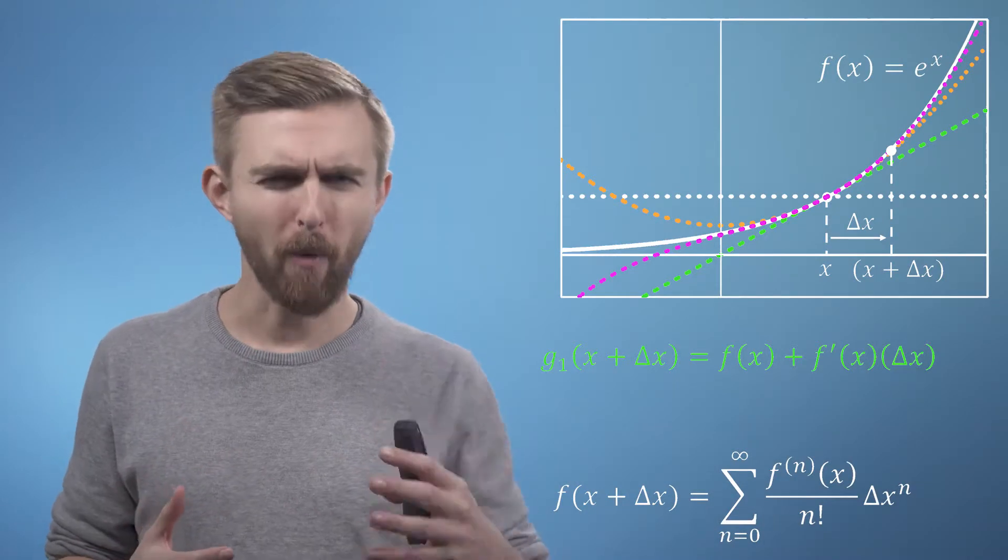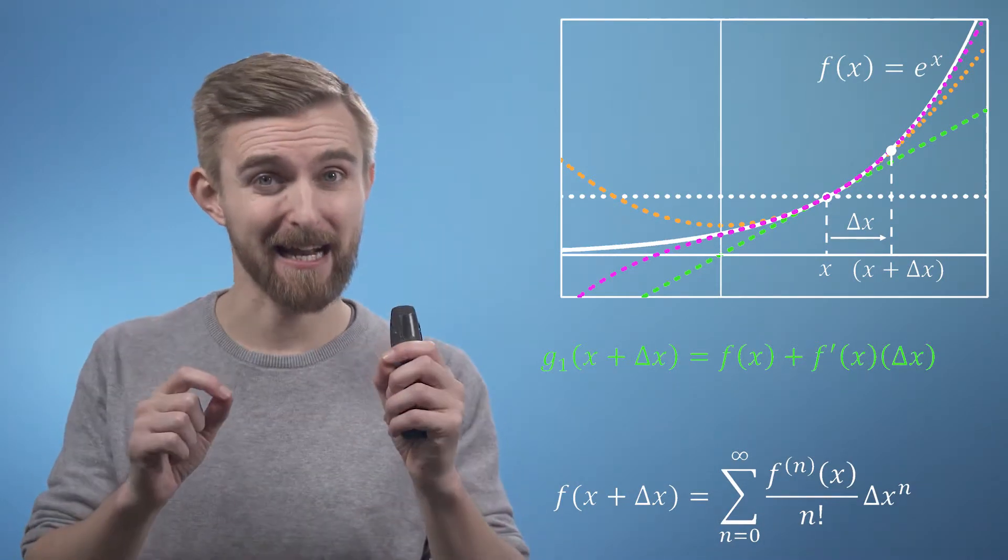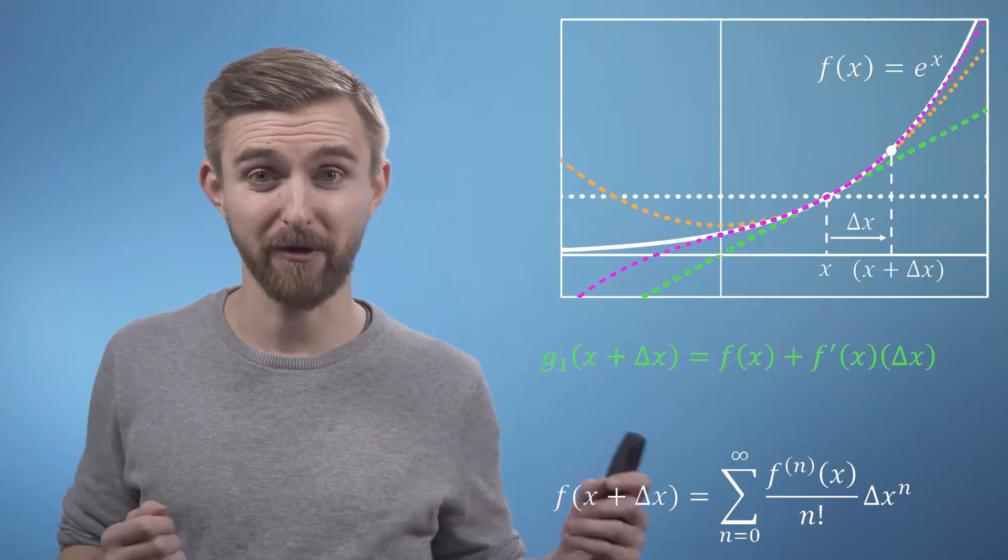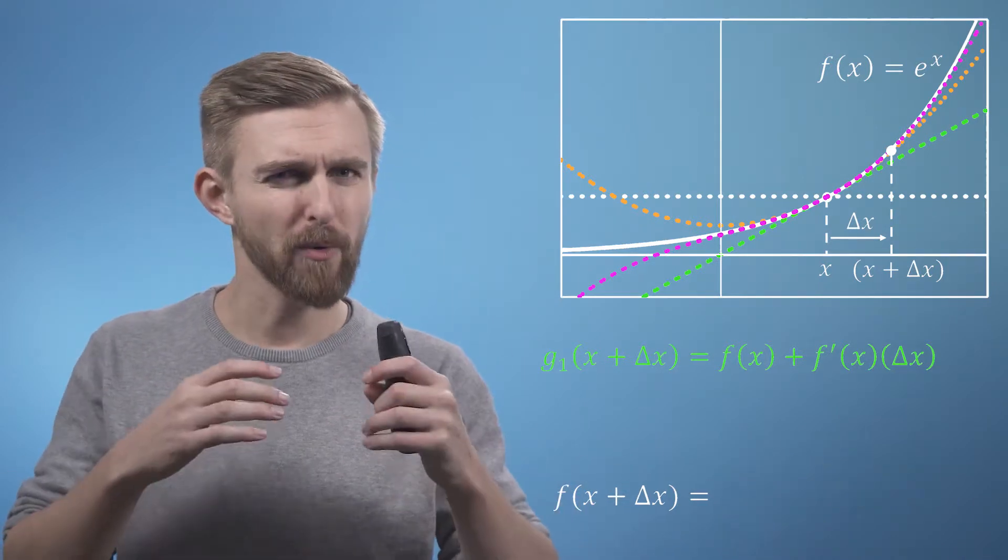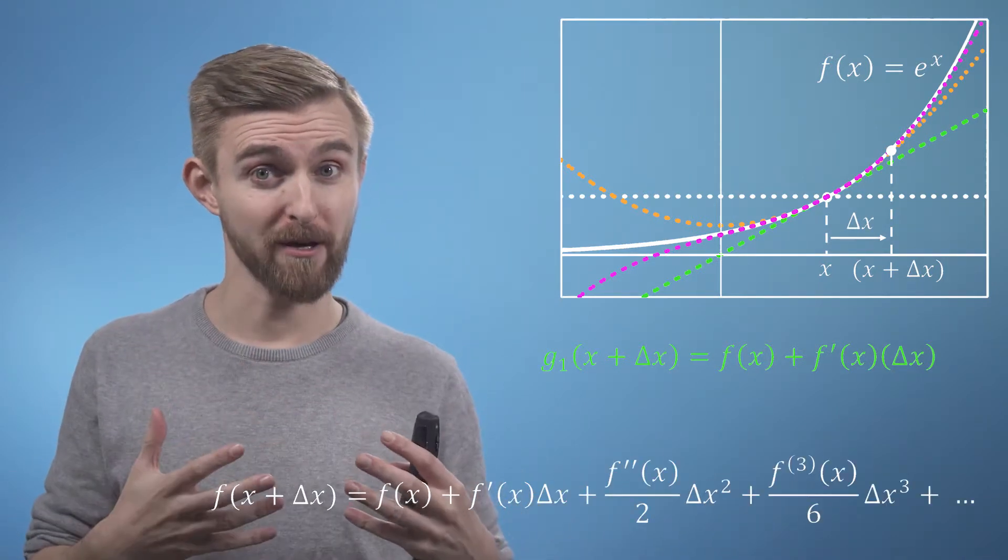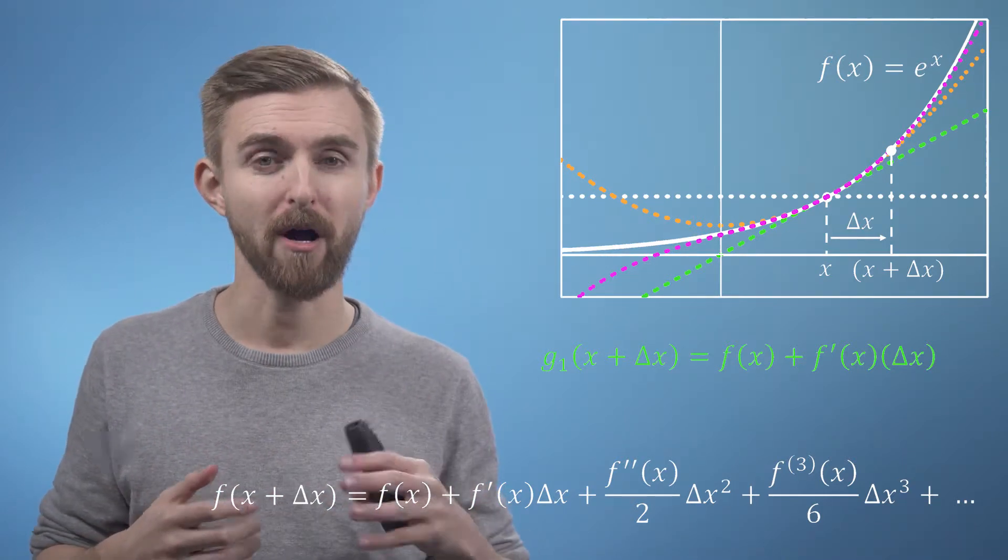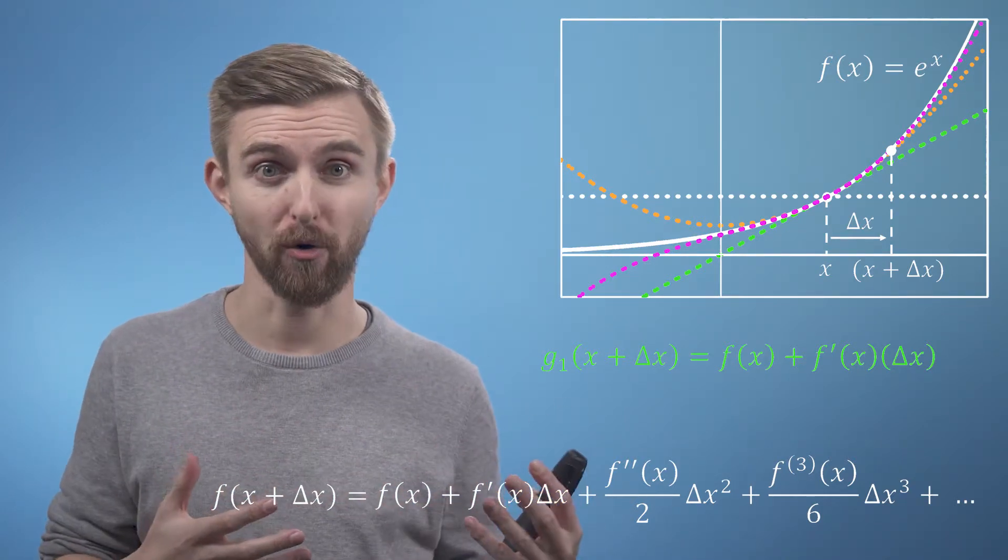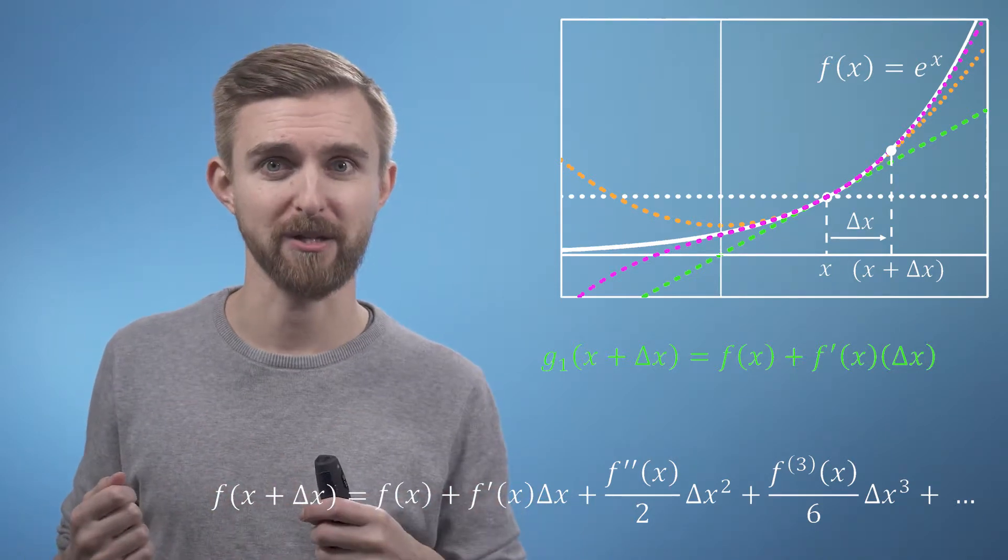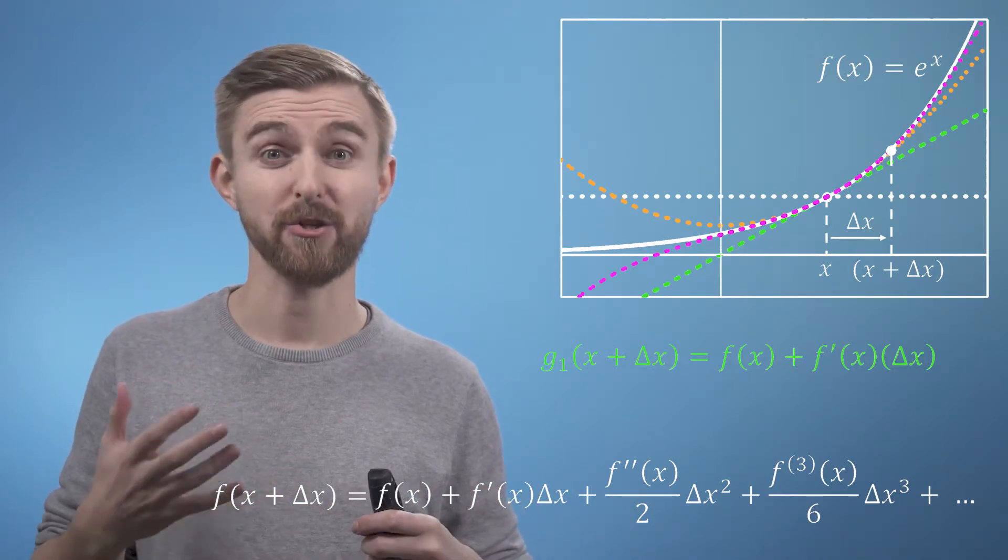Well, one way to think about it is that we know our function can be exactly represented by this infinitely long series. So although we won't be able to evaluate all of the terms, we do know that the next term along—i.e., the first term that we ignore when we're using our first order approximation—has a delta x squared in it.